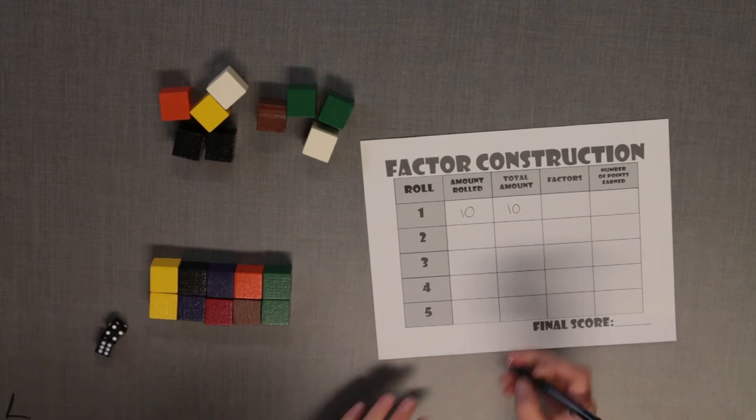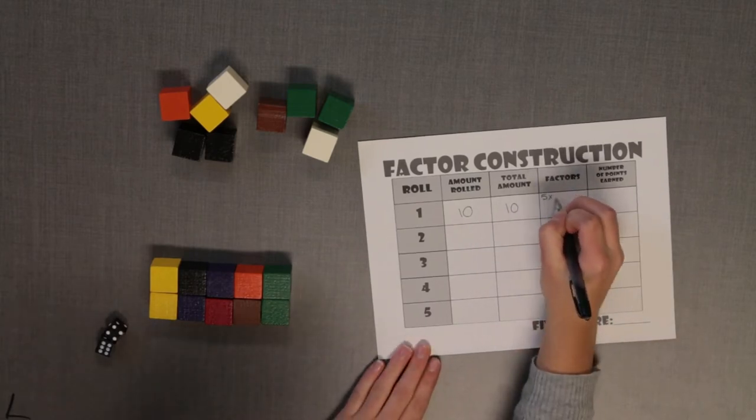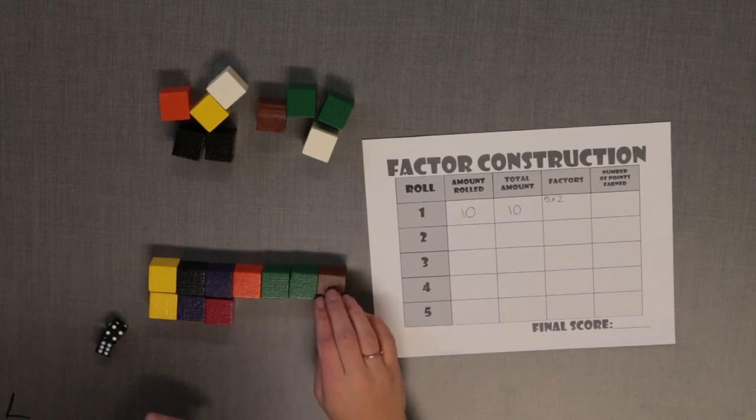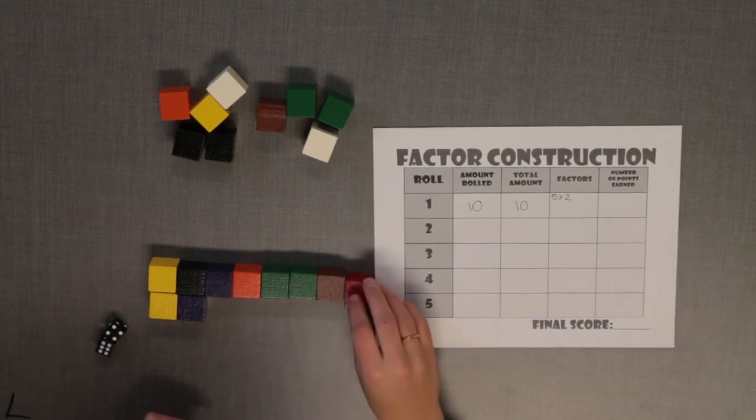Here's a prism with one side length of five and the other of two. So one pair of factors is five by two. I can also make a ten by one prism. So another pair of factors is one by ten.